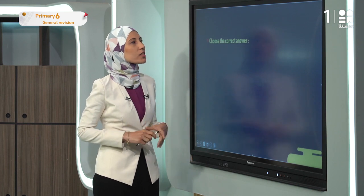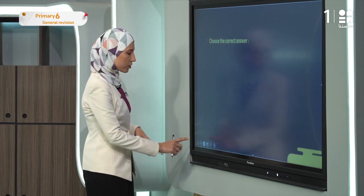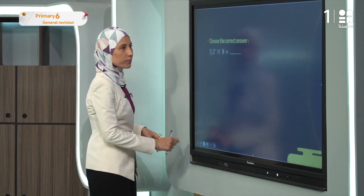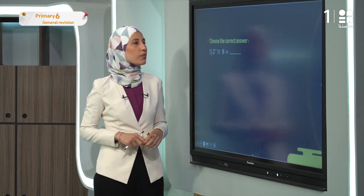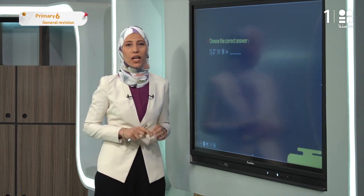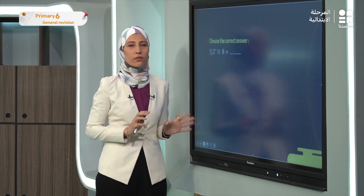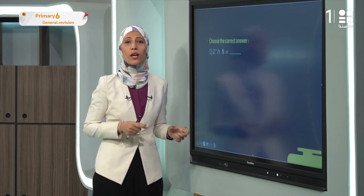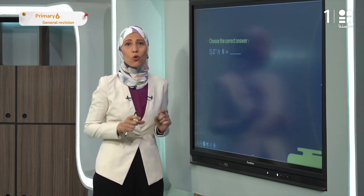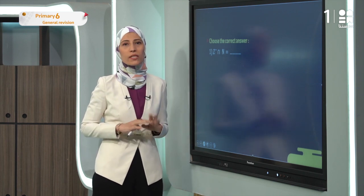The first exercise asks us to choose the correct answer for Z-negative intersect N. A lot of you get confused when answering such an example. You have two different ways to answer without getting confused: first, you can write the sets, or you can draw the number line.